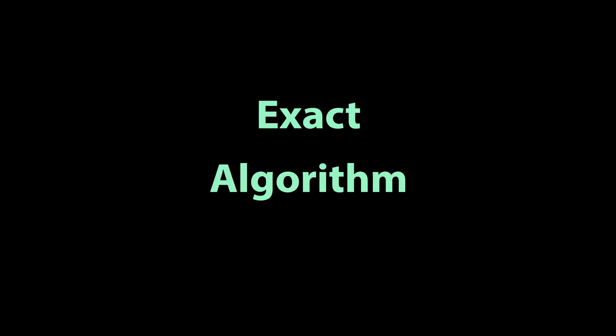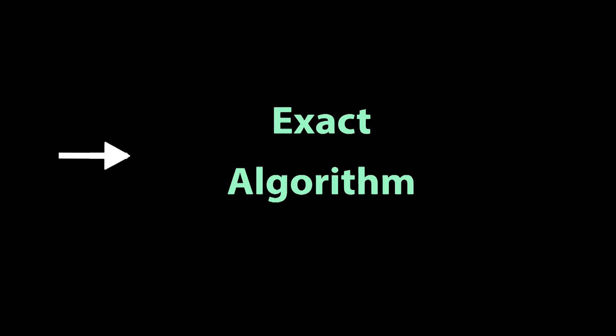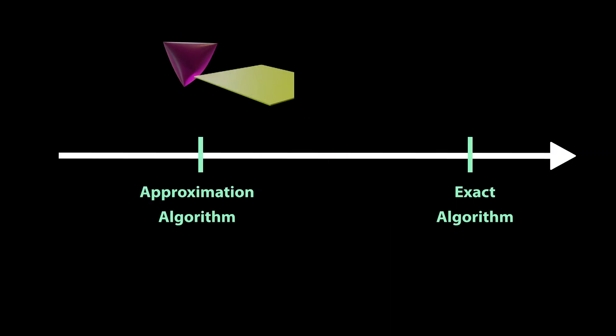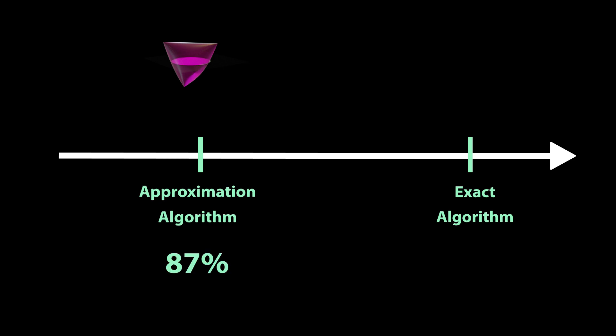At the risk of disappointing some of you, I must say that we will not be solving the MaxCut problem exactly today, but we will see an approximation algorithm based on semi-definite programming with an approximation ratio of 87%. What does approximation mean in this context? How does it work? Where is this 87% coming from? And how does it all relate to the famous P equals NP question?